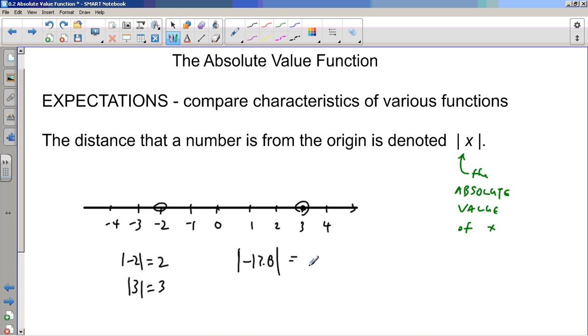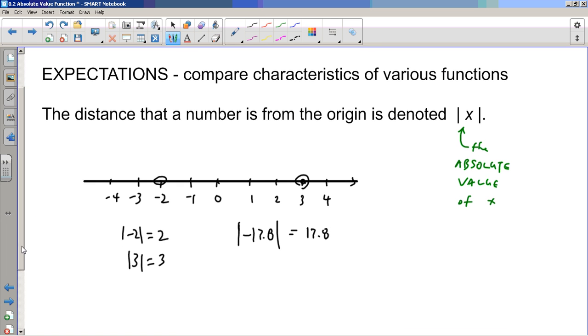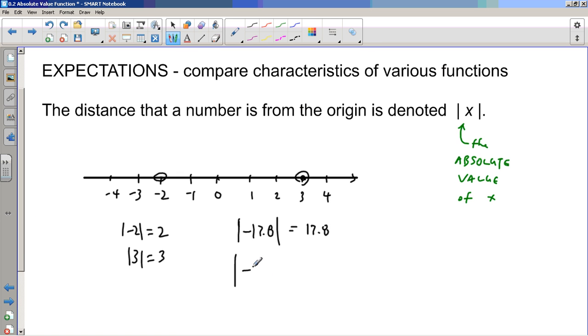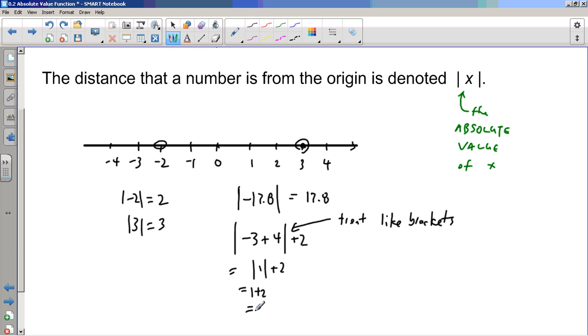I can take absolute values of negative numbers and decimals, right? The bigness of this real number is just its positive value. It's just that many units away. I can do operations with absolute value signs where I think of the, you treat absolute value signs like brackets, right? Treat them like brackets in expressions like this. And so that's the absolute value of negative three plus one is one plus two. Absolute value of one, the bigness of one is just one and that's three and so on.